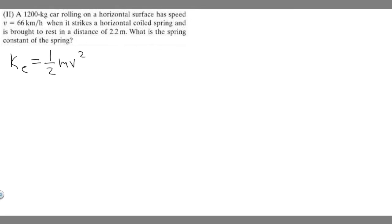There's another formula you need to know, which is the potential energy of the spring. The PE of the spring is going to equal this formula, which is one half kx squared, where k is the constant of the spring, which is what we're solving for, and x is the distance.